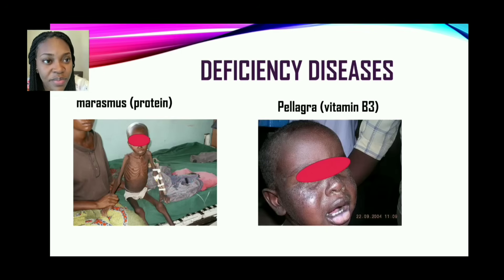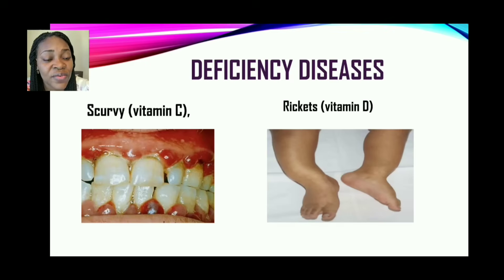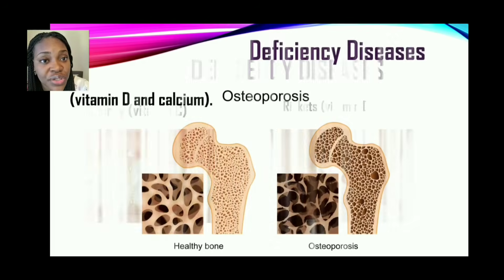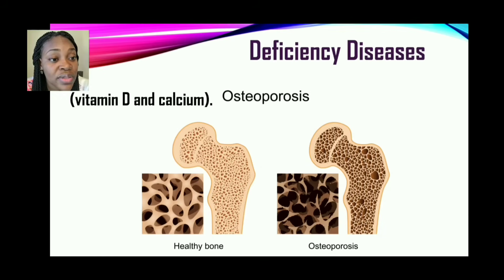There is also pellagra, which has to do with the 3Ds — we speak of dementia and dermatitis. For vitamin C there is scurvy; for vitamin D there is rickets, which often affects children. Vitamin D is also associated with osteoporosis. As you can see, this shows a healthy bone versus the bone of a person with osteoporosis.